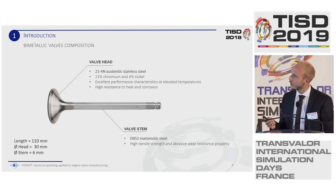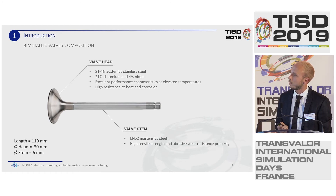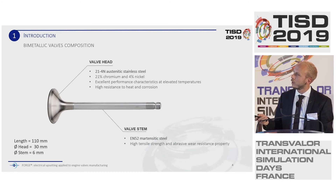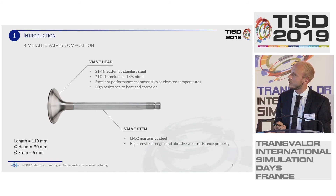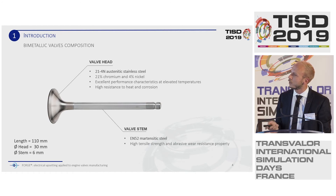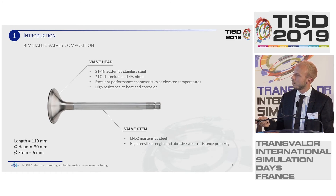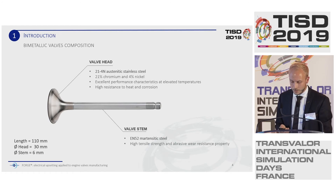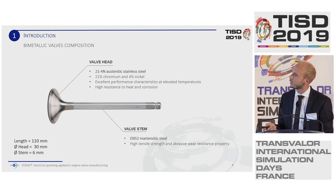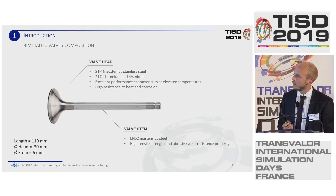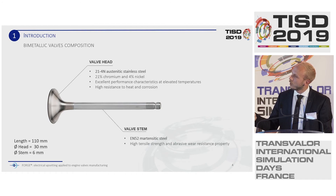For our study, we have selected a bimetallic valve. The valve is composed of one material at the head — 21-4N austenitic stainless steel — to get high performance for heat and impact forces. For the stem, we have EN-52 martensitic steel, which is known for its high tensile strength. To give an idea about the dimensions: the part length is under 110 mm, with a head diameter of 30 mm and a stem diameter of 6 mm.